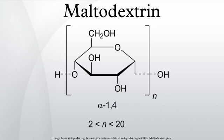Maltodextrins are classified by DE and have a DE between 3 to 20. The higher the DE value, the shorter the glucose chains, the higher the sweetness, the higher the solubility, and the lower the heat resistance.